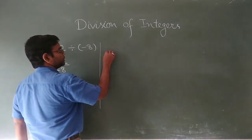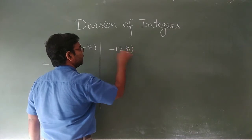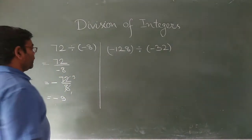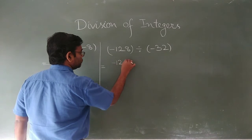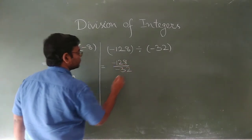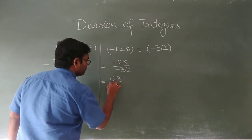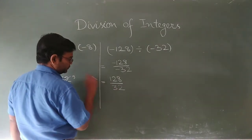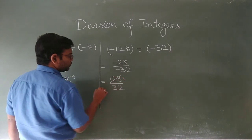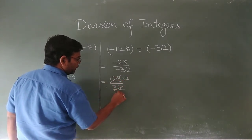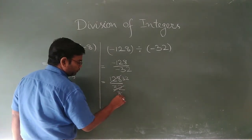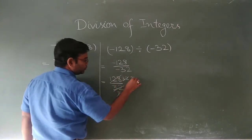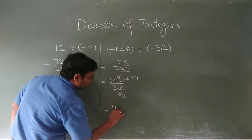Now if both integers are negative: minus 128 divided by minus 32. Negative divided by negative gives positive. So we compute 128 divided by 32 — since 4 times 32 equals 128, the answer is positive 4.